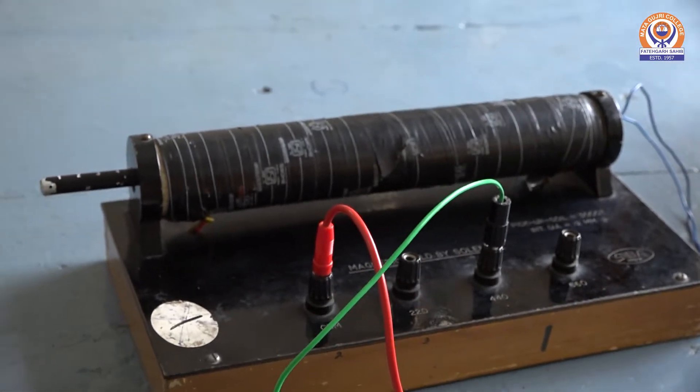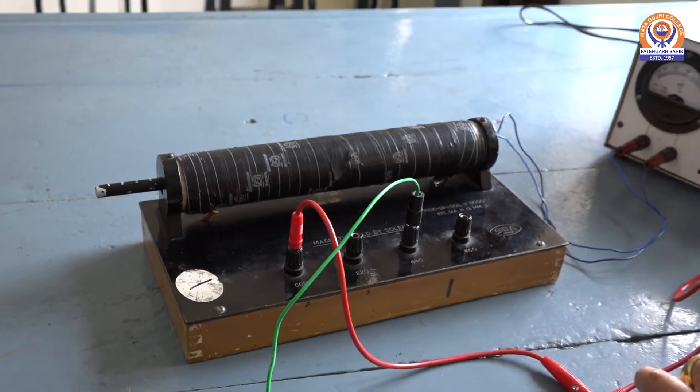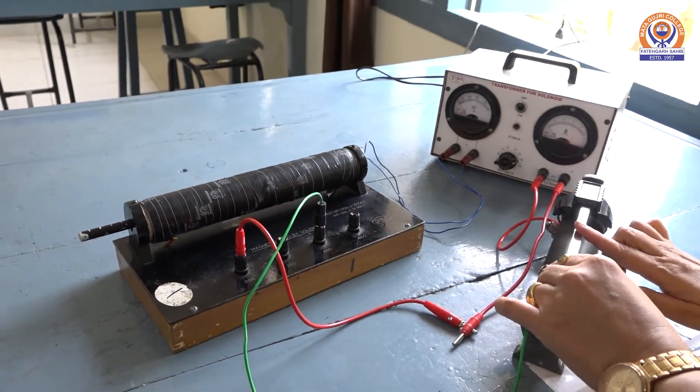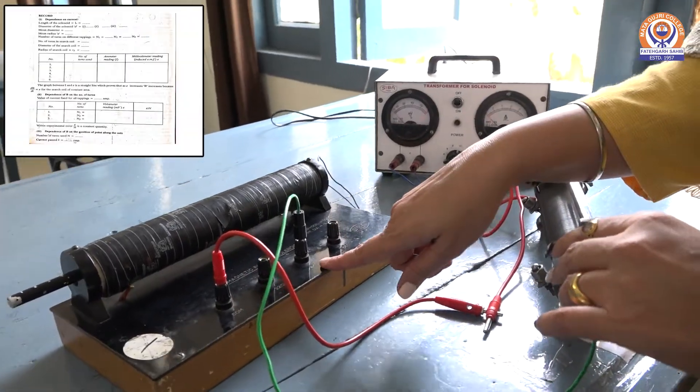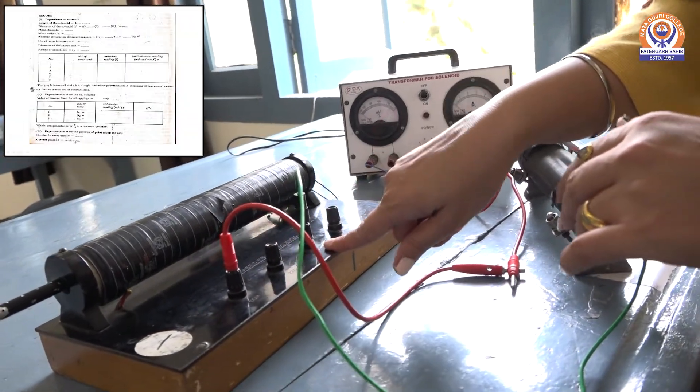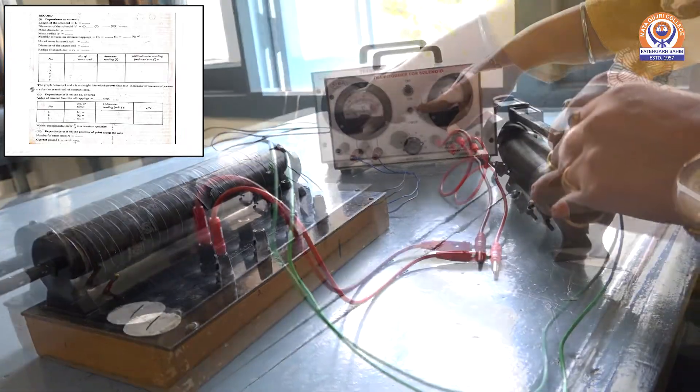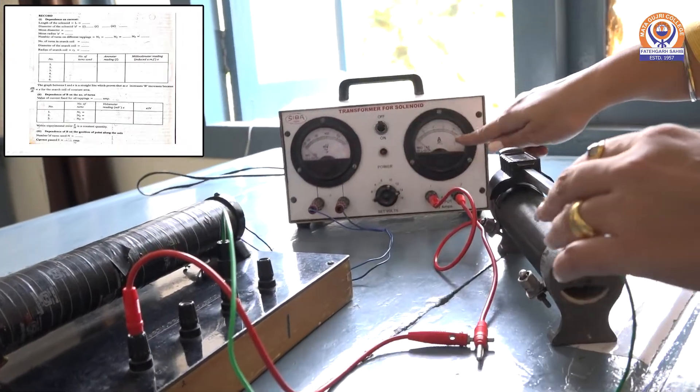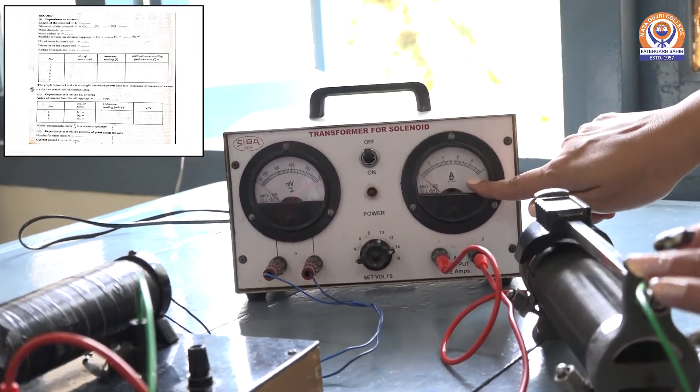So in the first part, we will change the current. We will vary the current from this rheostat and fix the number of turns for the solenoid, and take the reading of millivolt meter and reading of current from this ampere meter.